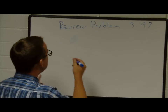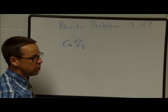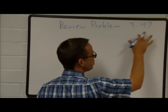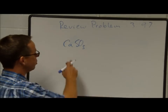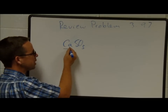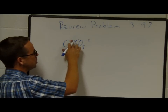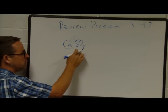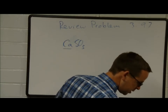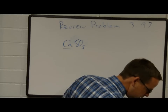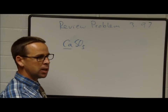CaSO₃: calcium is a metal, making this ionic. SO₃²⁻ is the sulfite ion (when it carries a 2-minus charge). Since calcium has a plus 2 charge, it combines with the sulfite ion in a 1-to-1 ratio — calcium sulfite. AgCN: silver is a transition metal, but it almost always forms only a plus 1 charge. CN⁻ is the cyanide ion, so this is silver cyanide.